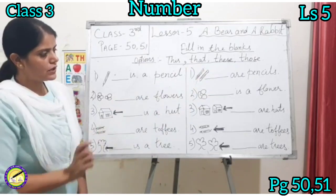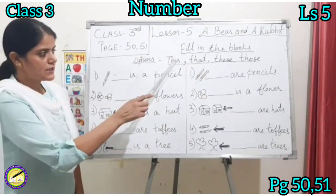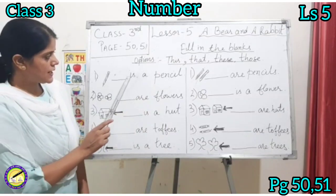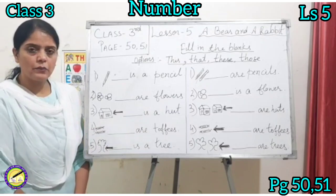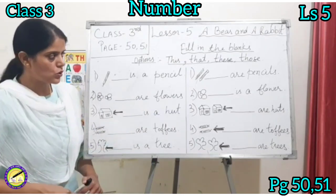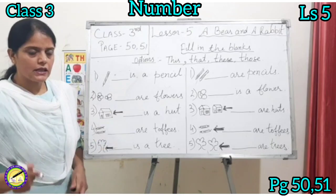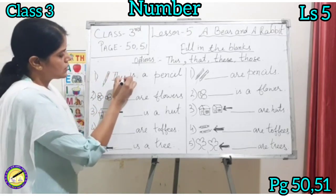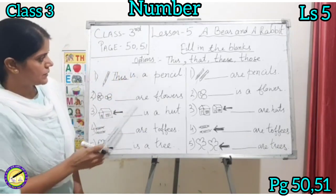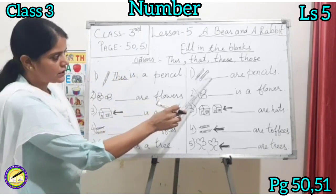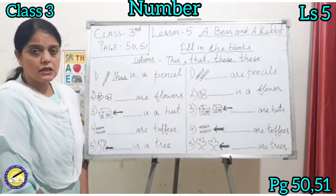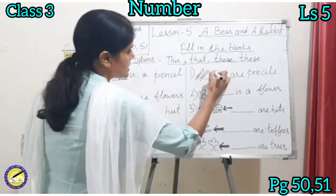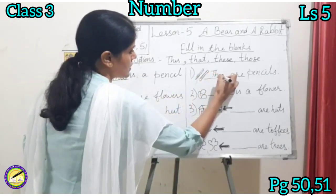The first one is: dash is a pencil. We can see that it is one pencil, so the answer is: this is a pencil. And if there is more than one — two pencils — the answer is: these are pencils.